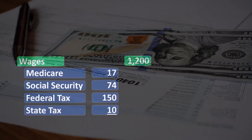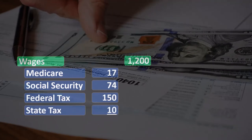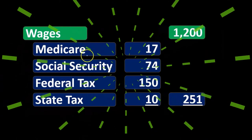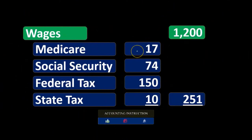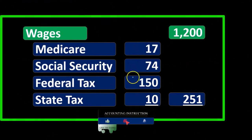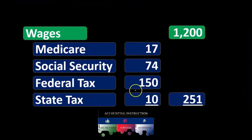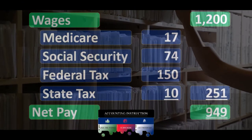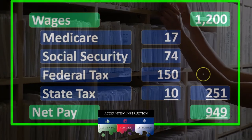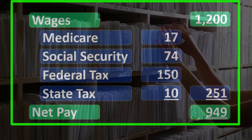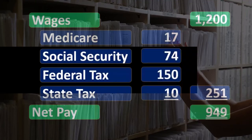And then we have the state tax, possibly depending on what state we are in. If we summed all those up, we'd have total deductions from the check: 17 plus 74 plus 150 plus 10, equaling 250. That would leave us with a net pay of $1,200 minus $251, equaling $949.